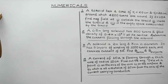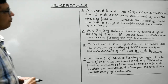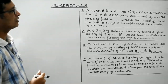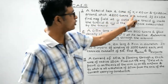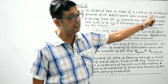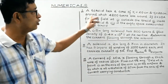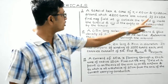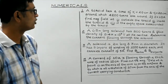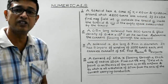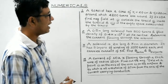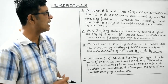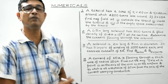Let's concentrate on question number one — it's a question based on toroidal solenoid. A toroid has a core of inner radius 20 centimeter and outer radius 22 centimeter, around which 4200 turns are wound. If a current of 10 Ampere is flowing through the toroid, we are supposed to determine the magnetic field outside the toroid, inside the toroid, and in the space surrounded by the toroid.